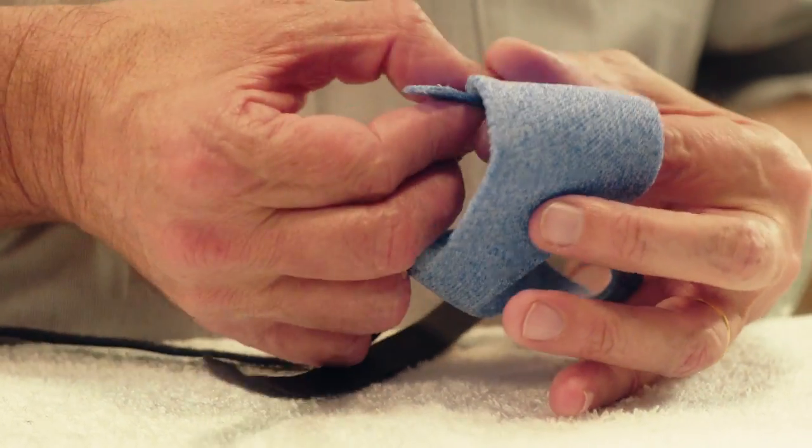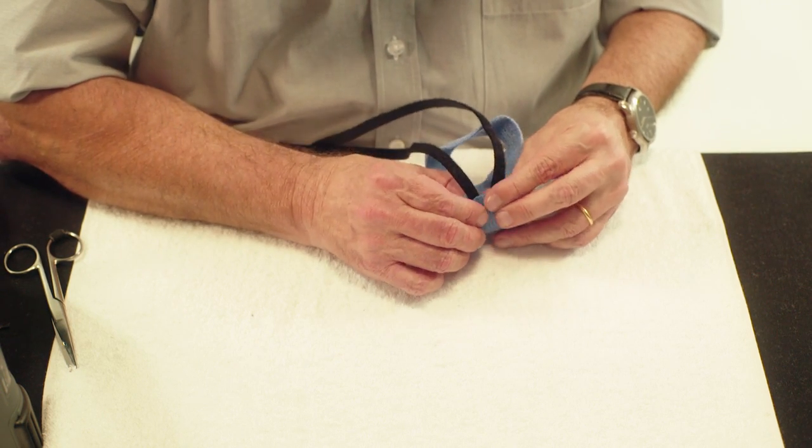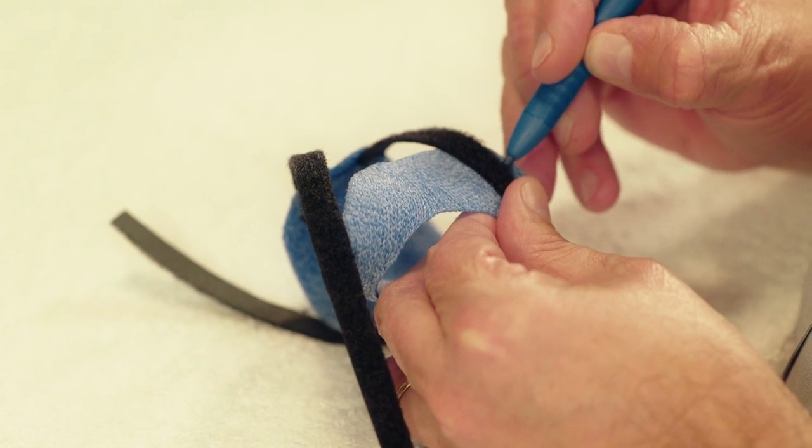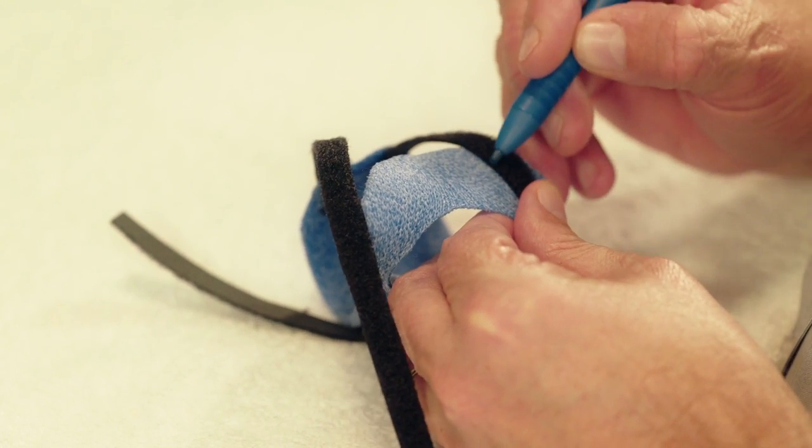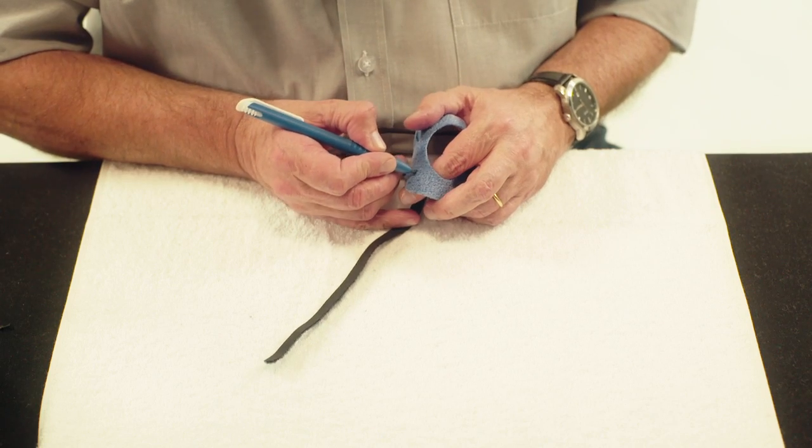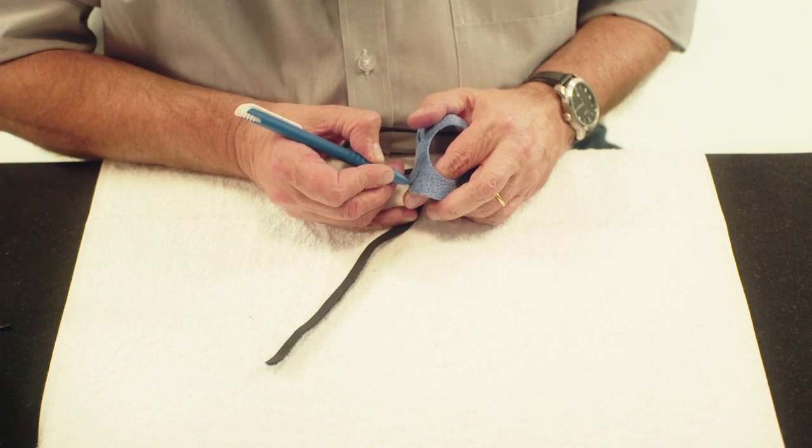Mark the direction of each strip on the thumb side. Cut a small slit for each of the strips on the dorsal thumb surface.